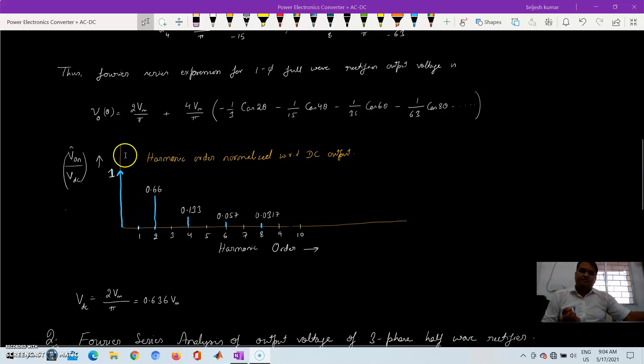So here apart from getting the DC output, a constant average value that we are supposed to get, we are also getting the even order harmonics and which is dominating is the second order, the most dominating because this is 66% of the DC value.